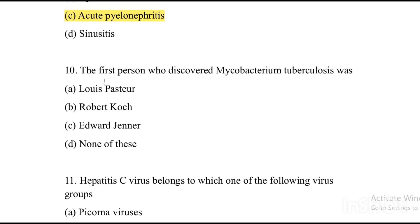Next question: The first person who discovered Mycobacterium tuberculosis was — Option A: Louis Pasteur. Option B: Robert Koch. Option C: Edward Jenner. Option D: none of these. The answer is Option B, Robert Koch.